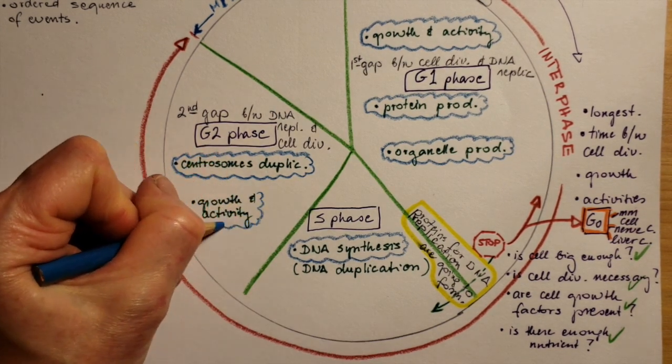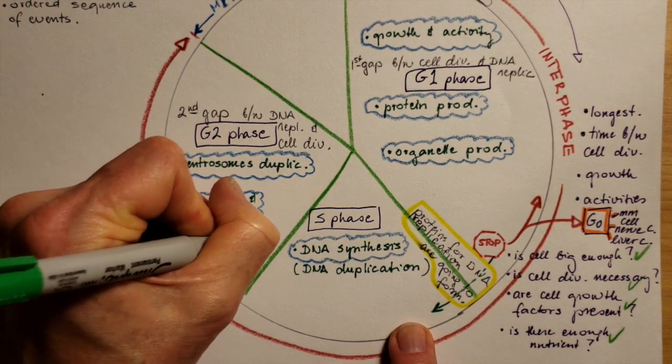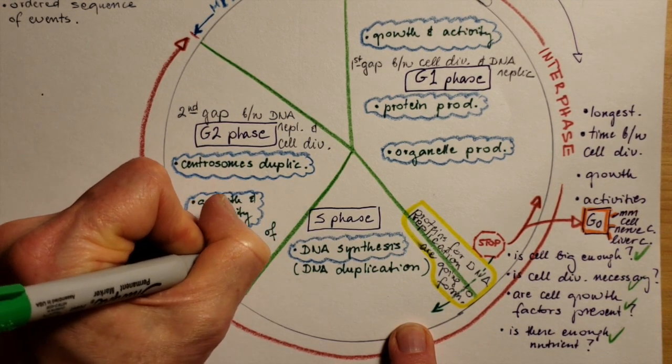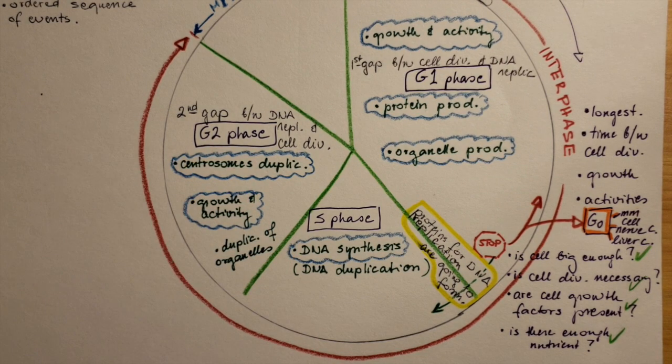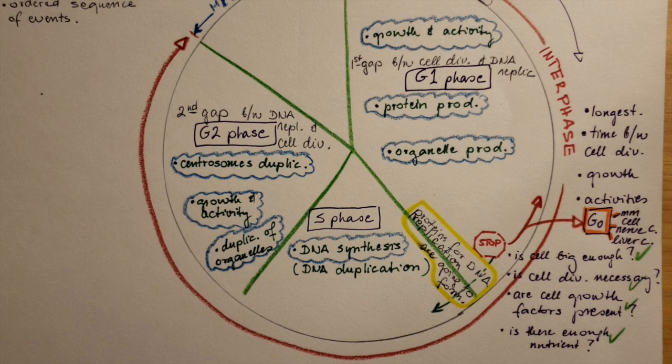They will still do their daily activities and their growth, as well as they duplicate the organelles now because the cell needs to divide the amount of organelles between the two cells. So it's really important to have enough organelles for both of the cells later on.